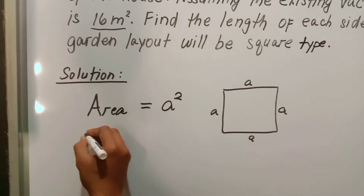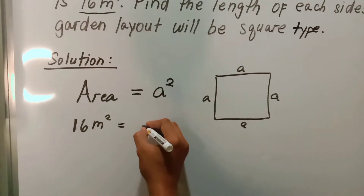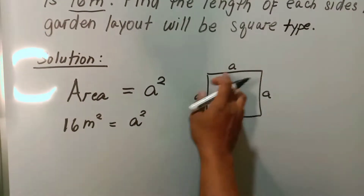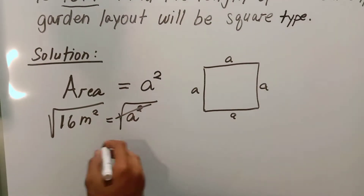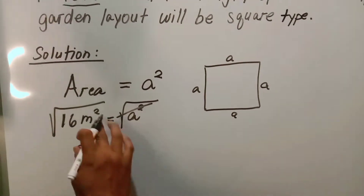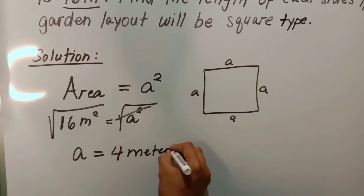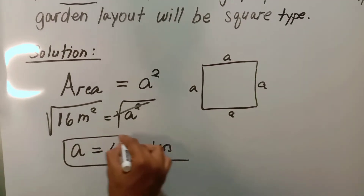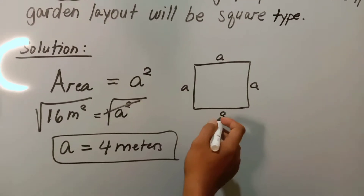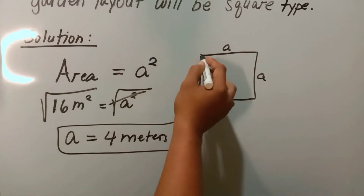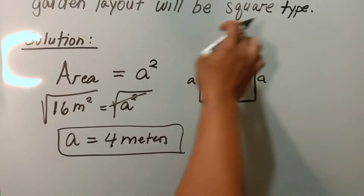Substituting: 16 square meters is equal to a squared. Taking the square root of both sides, a equals the square root of 16, which is 4 meters. So the length of each side of this garden lot is equal to 4 meters — this side is 4 meters, this one is 4 meters, and this one also is 4 meters, since the layout is a square type.